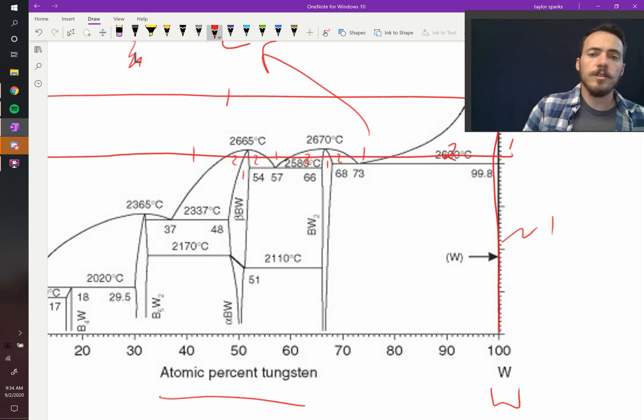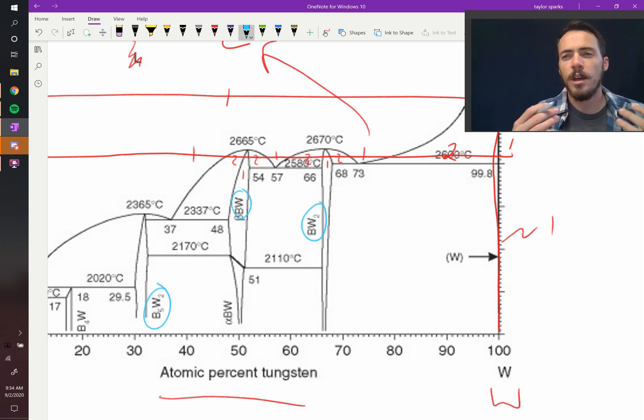Now, they've labeled these formulas as well. They've said that this is BW2, whereas this is just BW, and here you've got B5W2. How did they know what those formulas were? We'll cover that in another video.